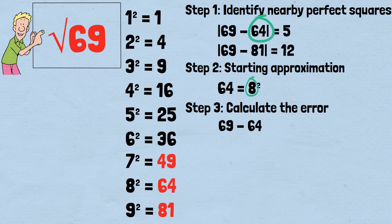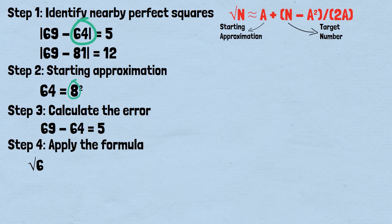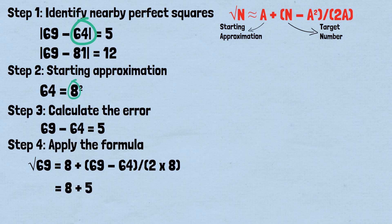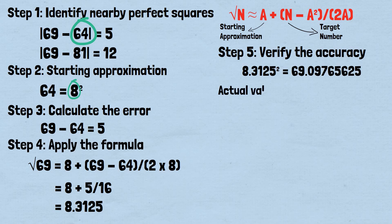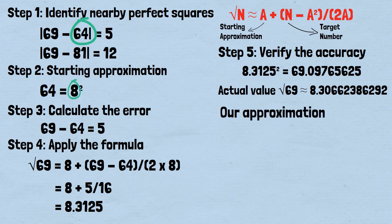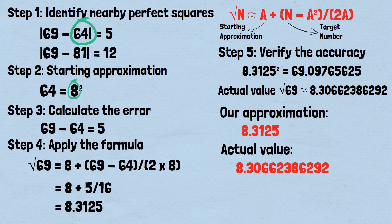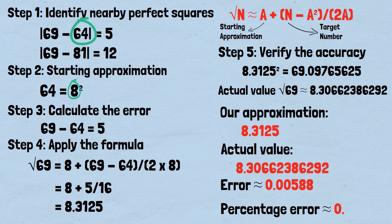Step 3: error — 69 minus 64 equals 5. Step 4: apply the formula — √69 ≈ 8 + 5/16 = 8.3125. Step 5: verify — 8.3125² = 69.09765625. Actual value is approximately 8.30662386292. Error approximately 0.00588; percentage error approximately 0.071%. Again, excellent accuracy with minimal computation.